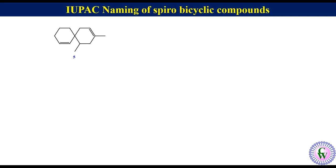Let's have another example of a similar type. Here also both rings are of the same size. Compared to the right-side ring, the left-side ring has an alkenic carbon nearer to the spiroatom, so it will be numbered first. The numbering will be 1, 2, 3, 4, 5, 6, 7, 8, 9, 10 and 11.